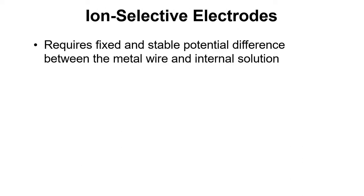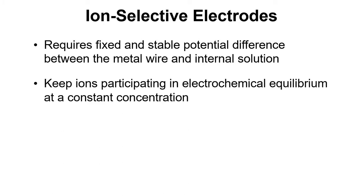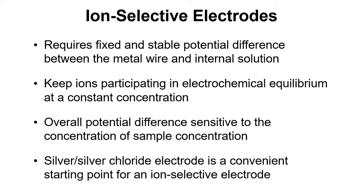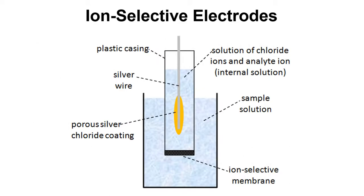For the reference electrode we need a fixed and stable potential difference between the wire and the internal solution, and we need to keep the ions participating in the electrochemical equilibrium at a constant concentration. The overall potential difference needs to be sensitive only to the sample concentration. Looking at the full assembly, we have a plastic casing with the internal solution containing chloride ions and the analyte ion, separated from the sample solution by an ion-selective membrane, with the silver wire and silver chloride coating inside.